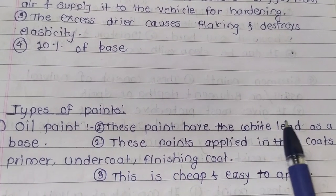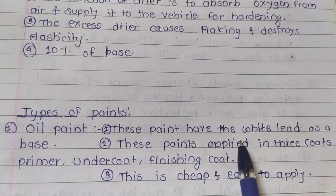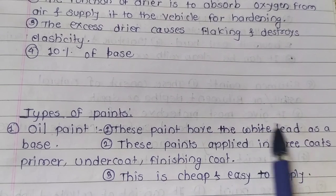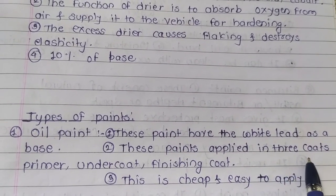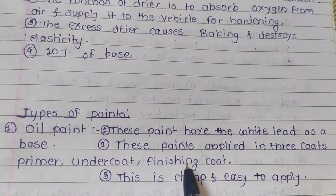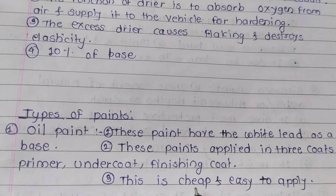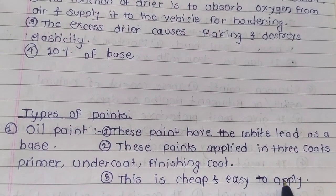First, oil paint. These paints have white lead as a base. These paints are applied in three coats: primer, undercoat, and finishing coat. This is cheap and easy to apply.